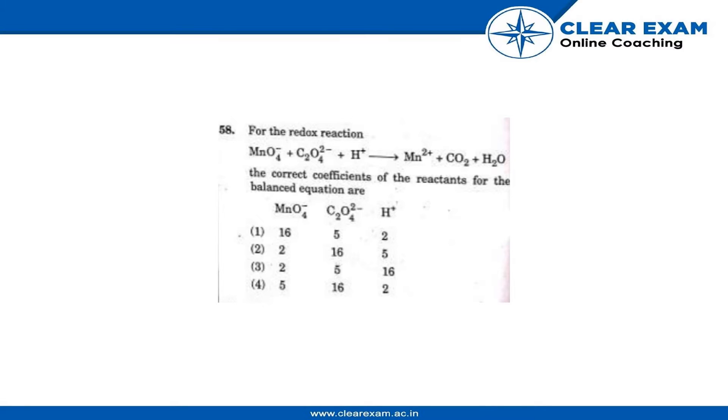The coefficients for MnO4^-, C2O4^2-, and H^+ in the options are: (1) 16, 5, 2; (2) 2, 16, 5; (3) 2, 5, 16; and (4) 5, 16, 2. So basically, what we have to find out is the correct coefficient of these three reactants to balance the equation.